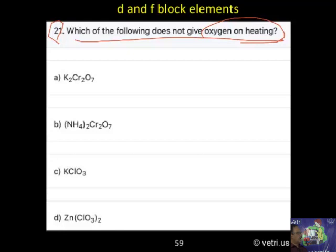Potassium dichromate, ammonium dichromate, potassium chlorate, zinc dichromate chlorate. You must know on heating what is happening. Question 21, you must know for heating in which case, with action of heat, what will happen?